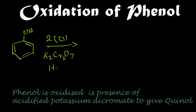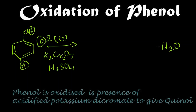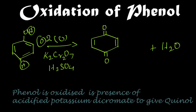It should be acidified with sulfuric acid. What happens — one oxygen is added, and the hydrogen atoms along with one oxygen will leave as a water molecule H₂O. The remaining oxygen will be attached to this carbon in the benzene ring with a double bond. This compound is called 1,4-benzoquinone.